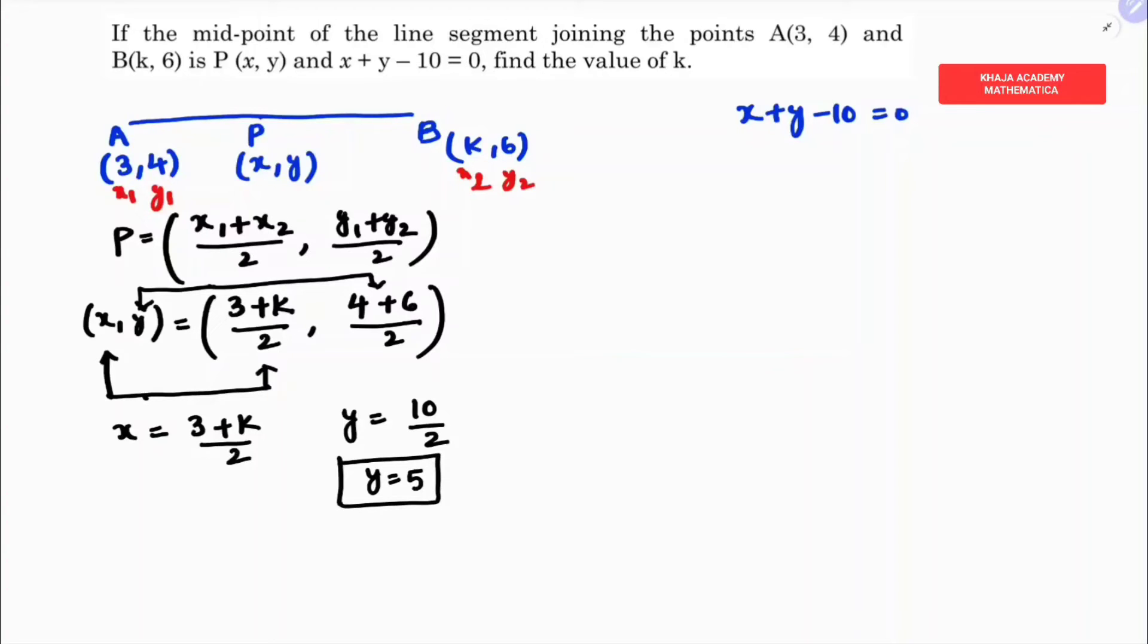Now I will substitute these x and y values into the equation. So (3 + k)/2 + 5 - 10 = 0. Therefore (3 + k)/2 - 5 = 0. Transposing, (3 + k)/2 = 5.